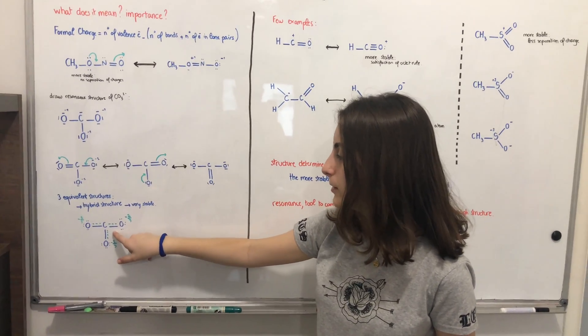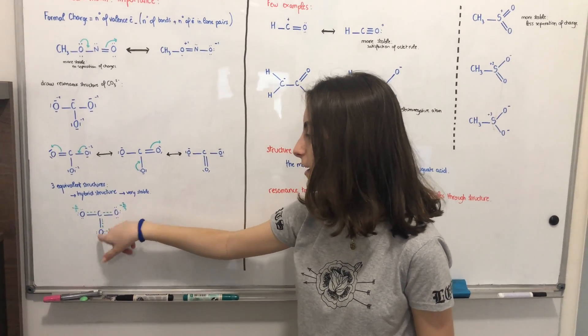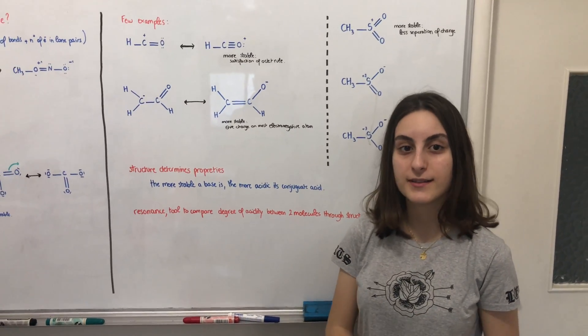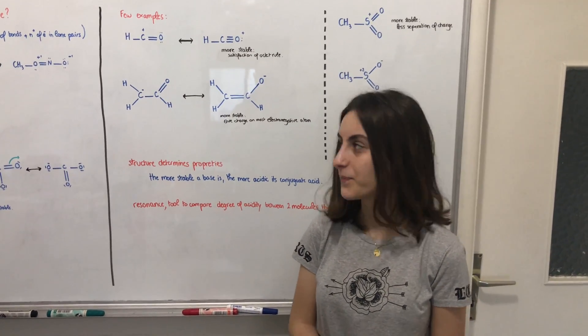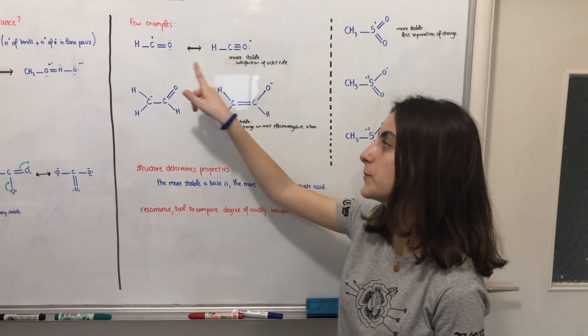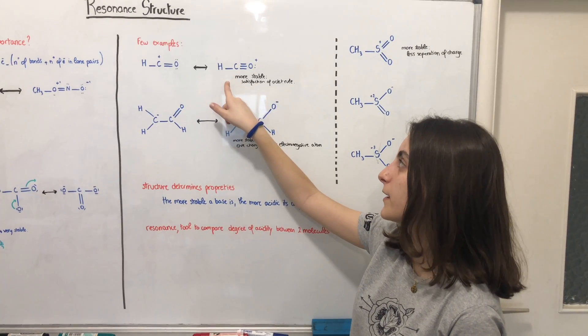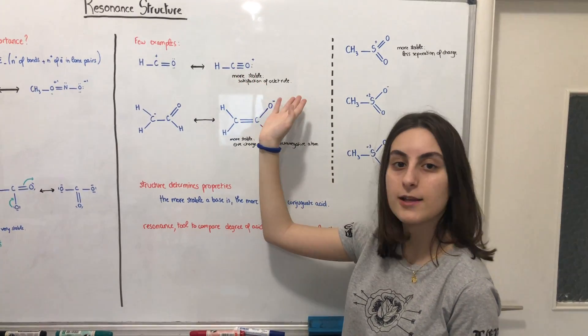So we can see here there are partial double bonds between the C and every O. So here are a few examples of resonance structures in which we are going to determine which is the most stable. So the first example, we can see that the second one is more stable than the first one, because here the carbon atom satisfies the octet rule.